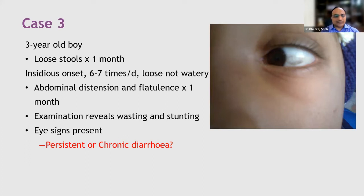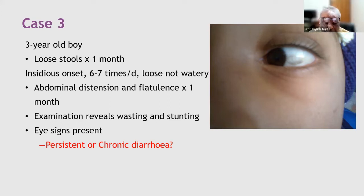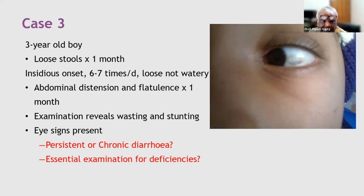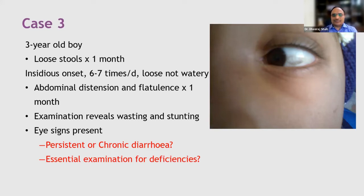This child is three years old with insidious onset, stools that are not watery, no dehydration, and signs of malabsorption — all suggesting chronic diarrhea rather than persistent diarrhea. Moving on, when examining such a case, general physical examination is the most important component. We need to identify what essential examinations should be performed to diagnose various nutrient deficiencies, since malabsorption leads to multiple deficiencies.